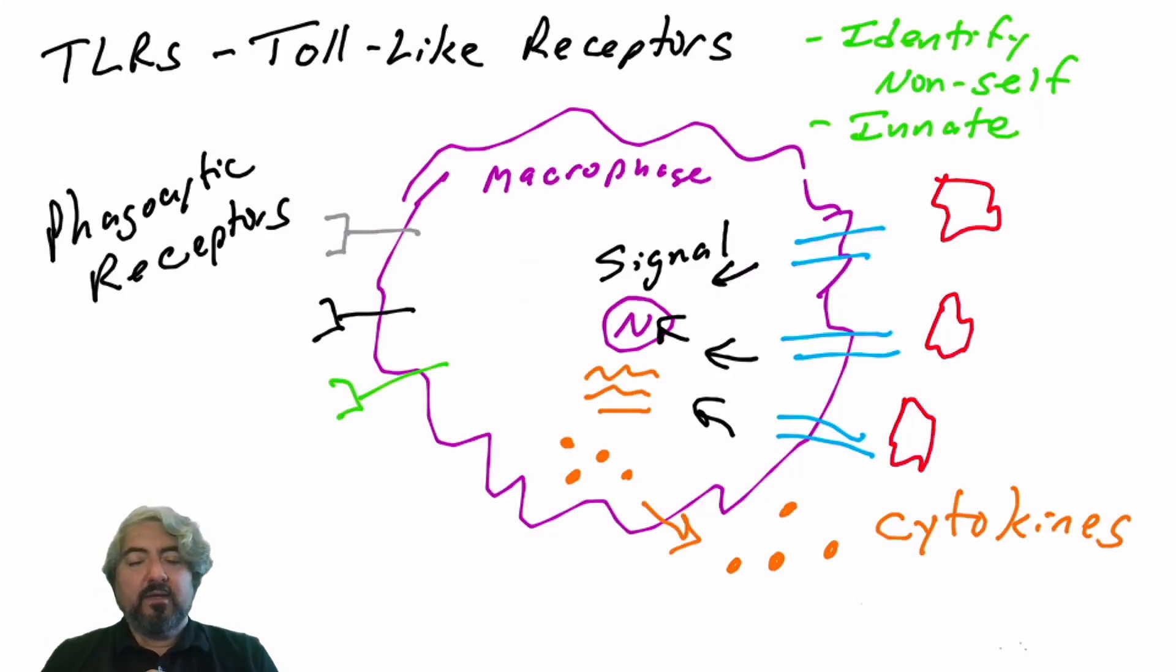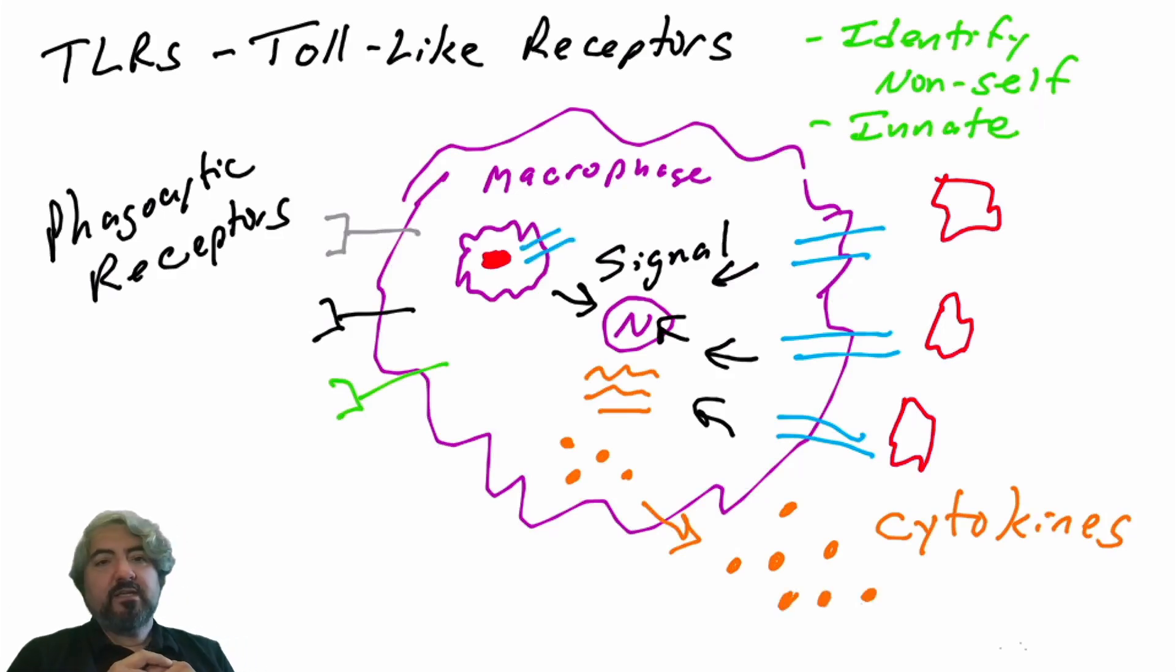There are many cytokines we're going to learn about a couple of them in the next video and throughout the course. I will mention here, and there will be a much later video on toll-like receptors, that toll-like receptors can also be found internally in cells.